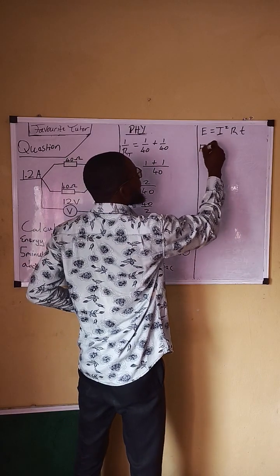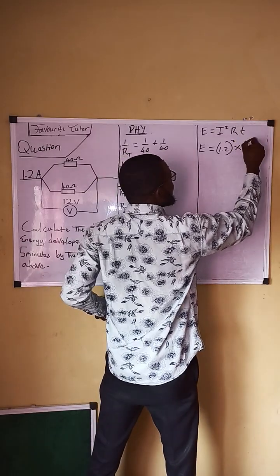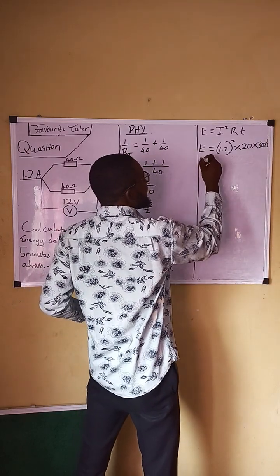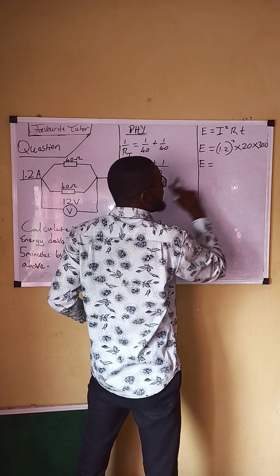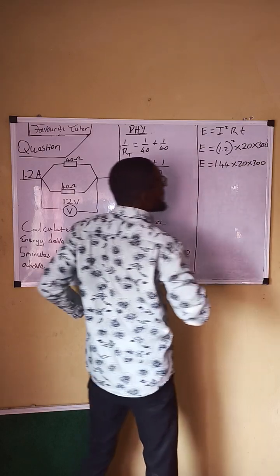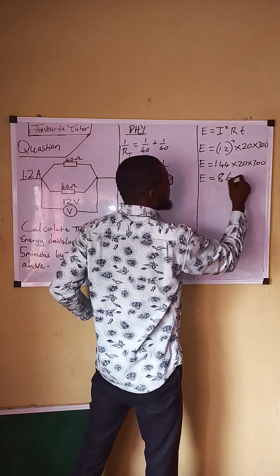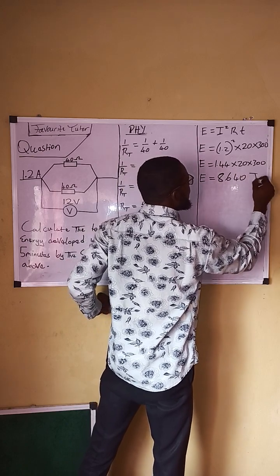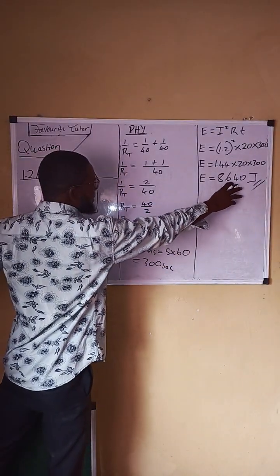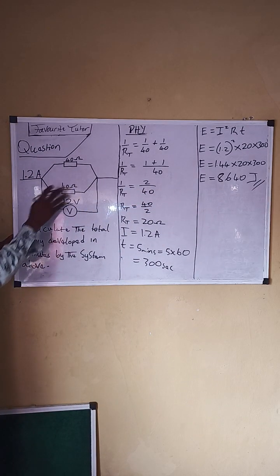Moving further: Energy = I² × R × t = (1.2)² × 20 × 300. Now, 1.2 squared equals 1.44, multiplied by 20 gives 28.8, multiplied by 300 gives 8,640 joules. This is our answer — 8,640 joules is the total energy developed in five minutes.